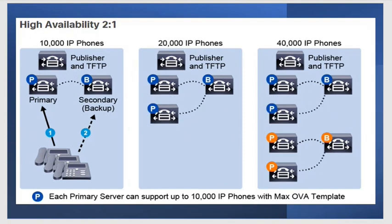Next is the two-to-one design. In two-to-one, you can have two servers and one backup. If you have one publisher and one subscriber, then you will have one backup. But if you have two subscribers, you can have one backup for that. Let's say you do not have that many resources — you want just one server as a backup for two of your main subscribers, primary and secondary. Same way, if you have four subscribers in two groups of two, you can have one backup each. That is two-to-one high availability.